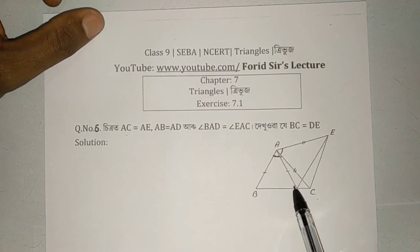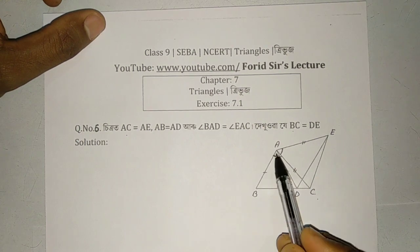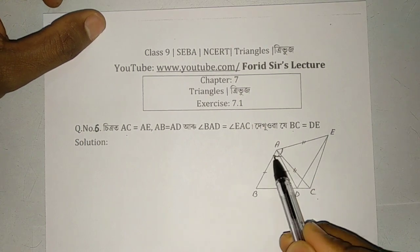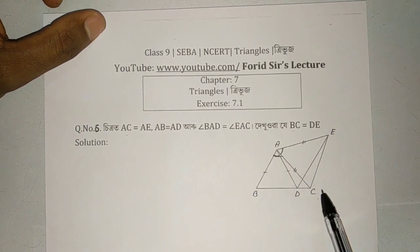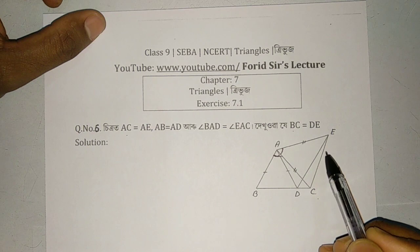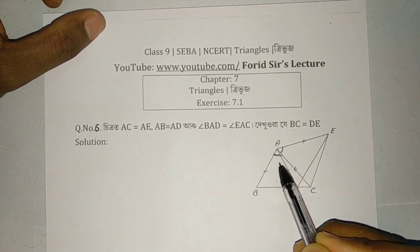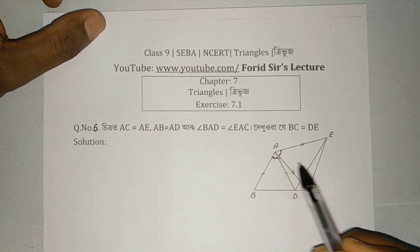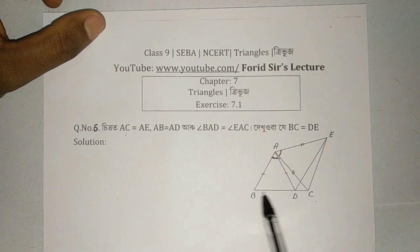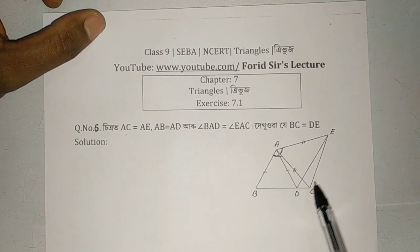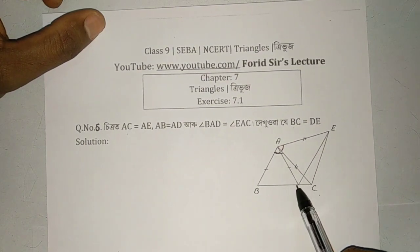And we know that angle BAD equals angle EAC — that is given. We have to prove that BC equals DE.